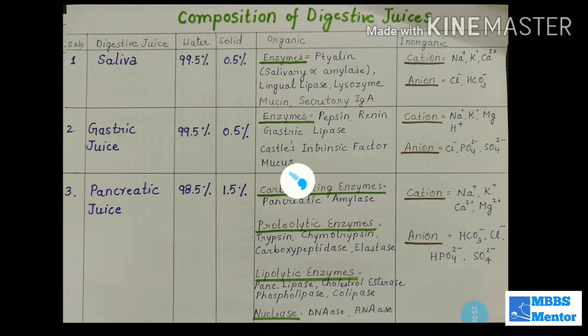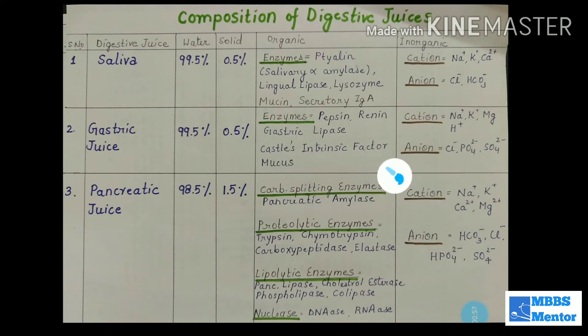Gastric juice also contains Castle's intrinsic factor, which is important for vitamin B12 absorption, as well as mucus.